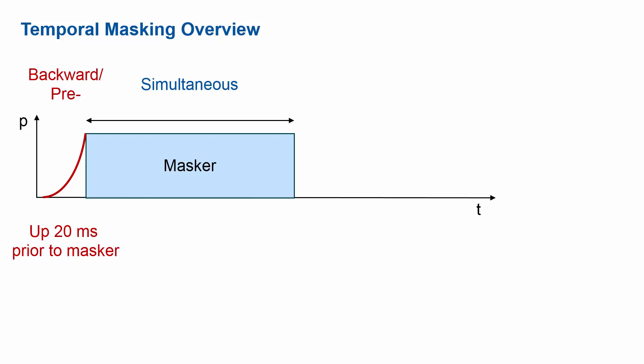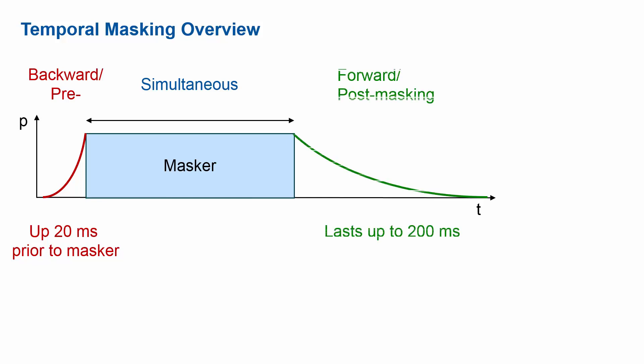The other masking, which is much more pronounced, is called forward masking. After turning off the masker, it will still continue to mask signals that come later. A short probe's threshold needs to be increased for it to be audible even out to 200 milliseconds. That's quite pronounced and this is what we look at in the next graph.